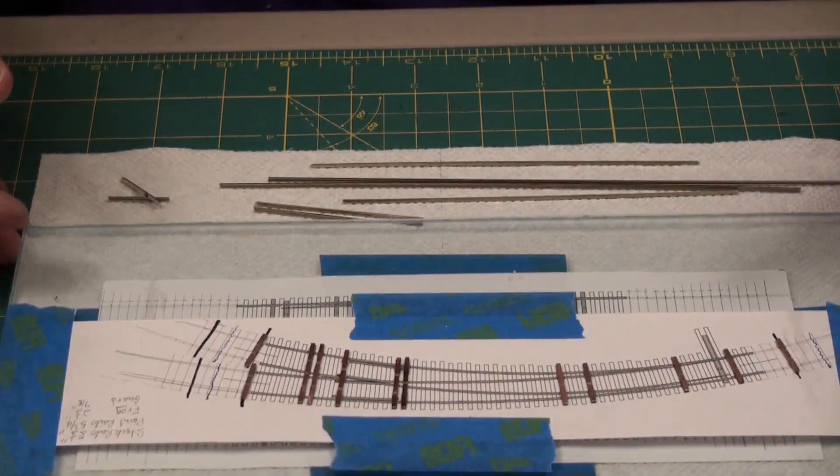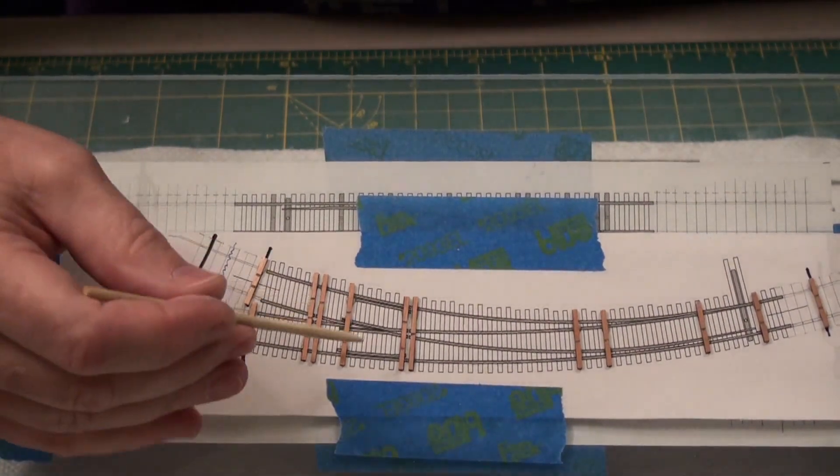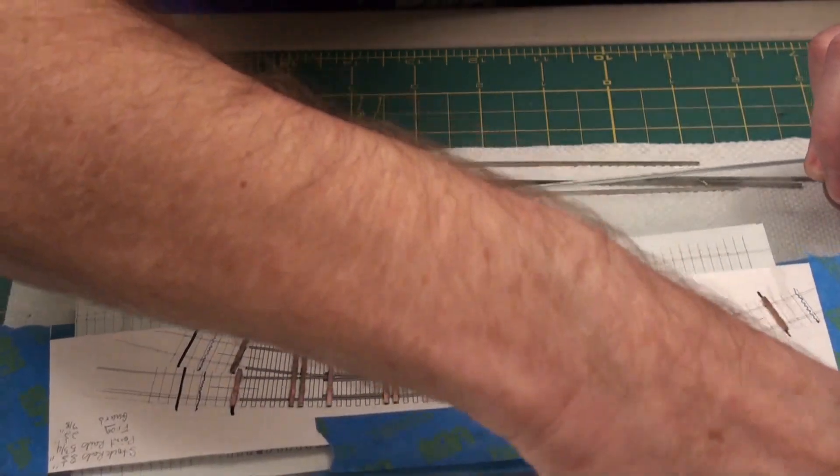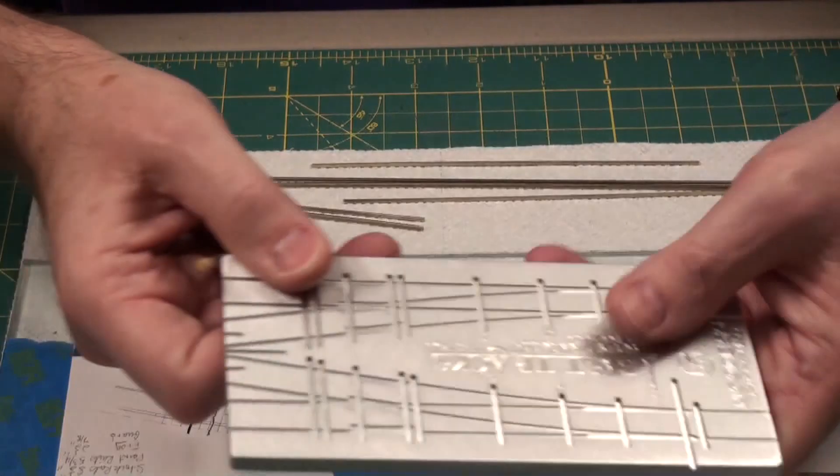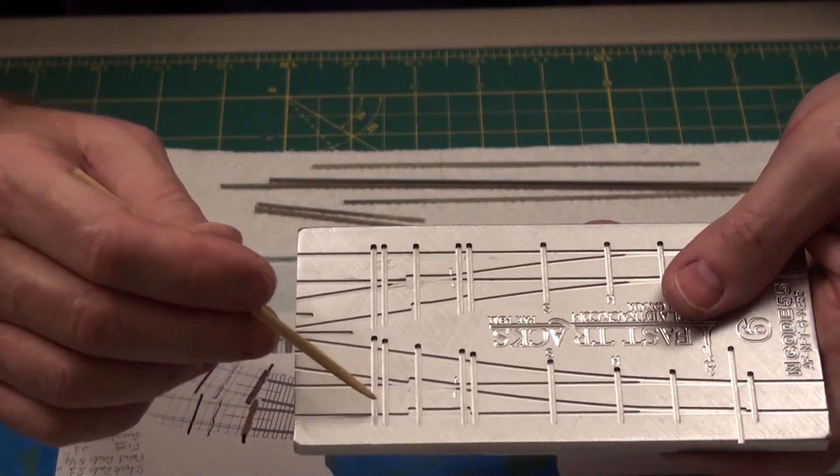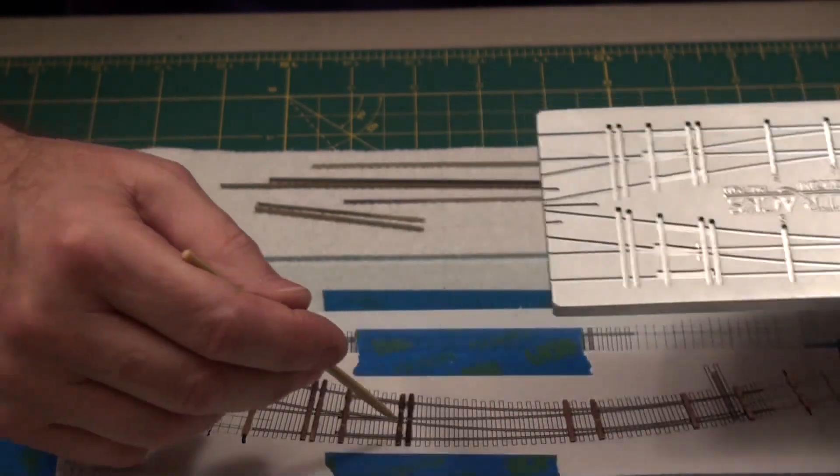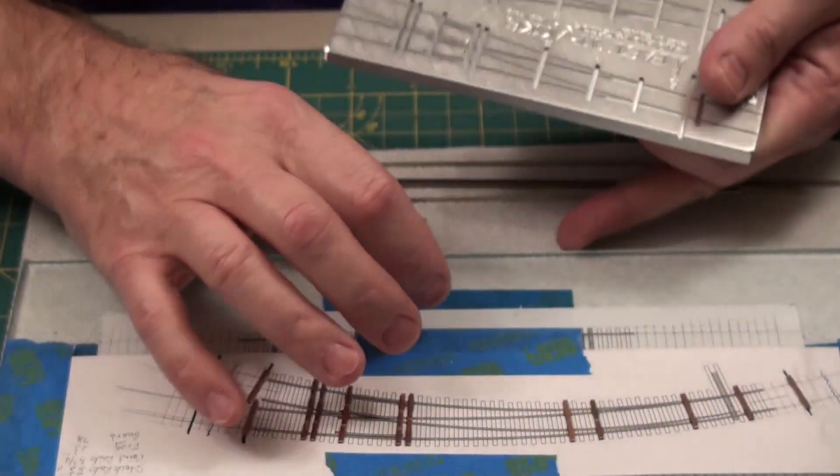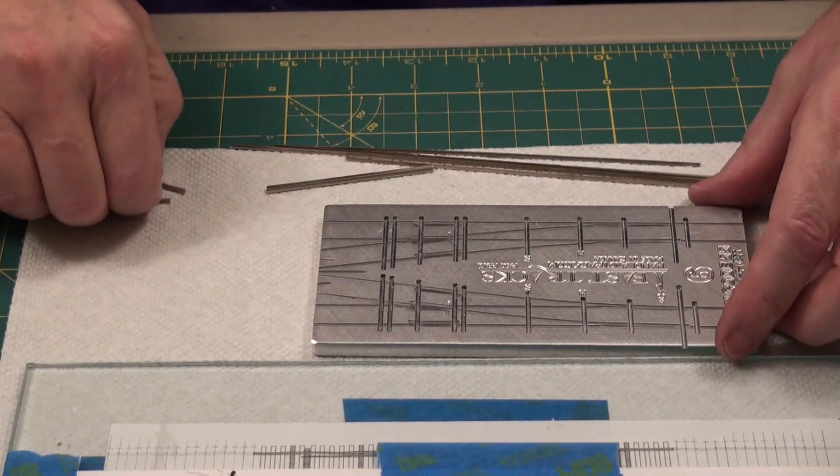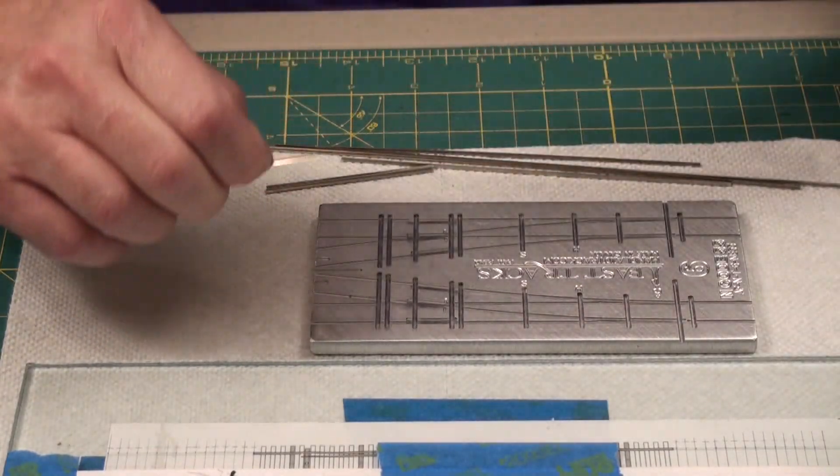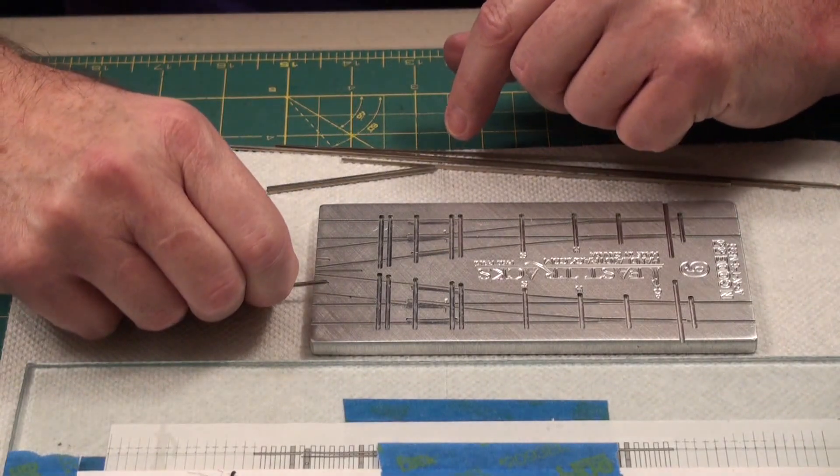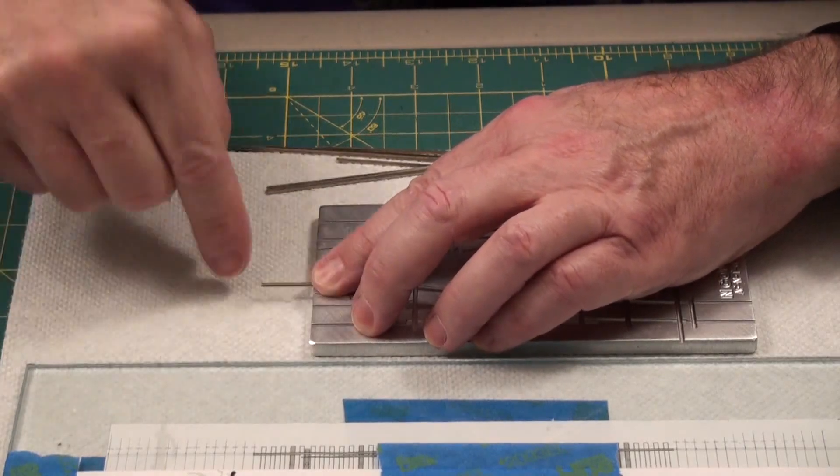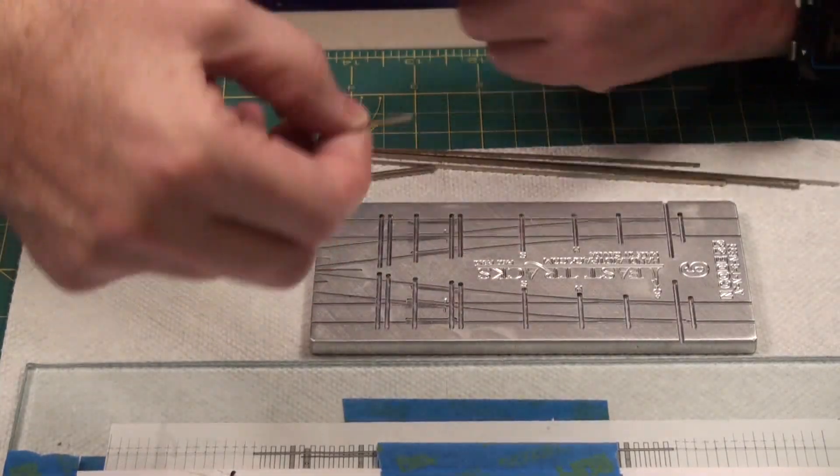For example, to bend for the guard rails here, on here they have a handy little jig at the end. This is to size the guard rail for one of these turnouts. It's a regular turnout. This is a curved turnout, it's a little bit longer. And then they have a little indentation here. What you do with that is you take your guard rail and you slip it in a little indentation like that. Hold it down with your finger and bend until it's horizontal. And that puts a little bit of a bend in it.